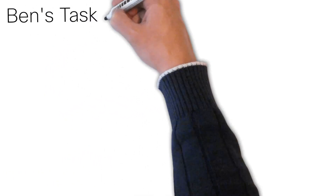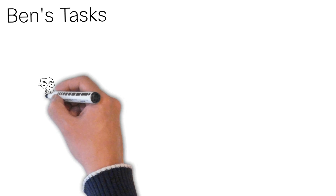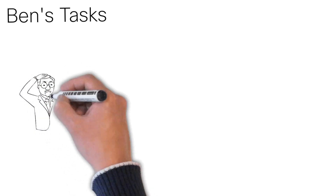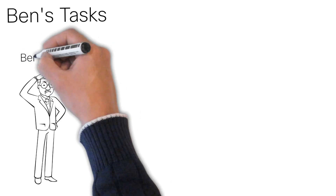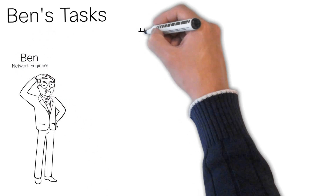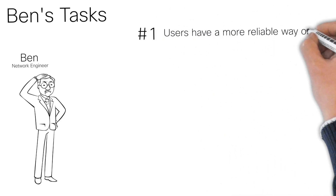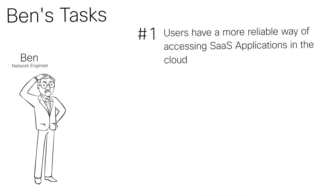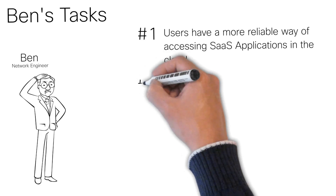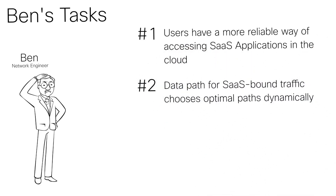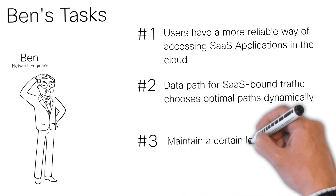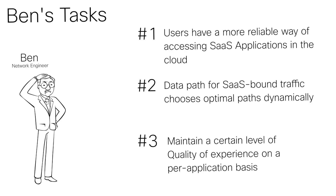Now let's move to Ben, another network engineer with the same enterprise. The enterprise has now shifted focus towards optimizing SaaS application user flows towards the cloud. Hence the following tasks. Task one: users should have a more reliable way of connecting to SaaS applications in the cloud. Number two: the data path chosen for SaaS-driven traffic should be done in a dynamic fashion and in an optimized way. Number three: we should maintain a certain level of quality of experience on a per-application basis.